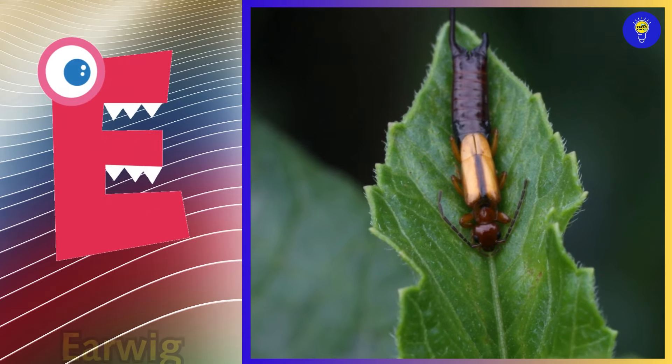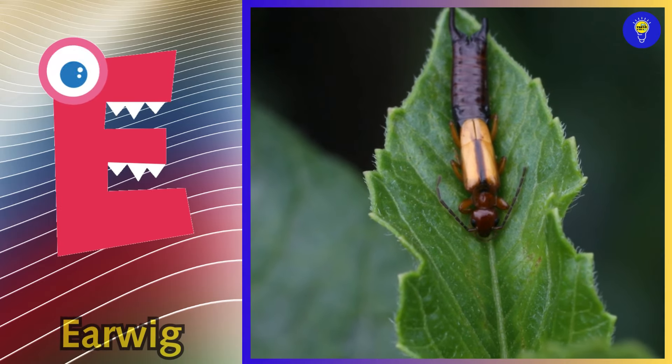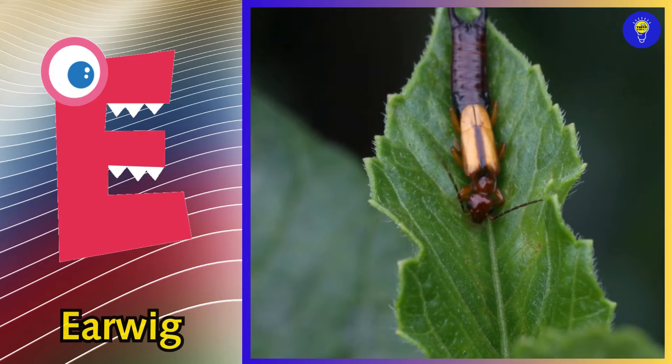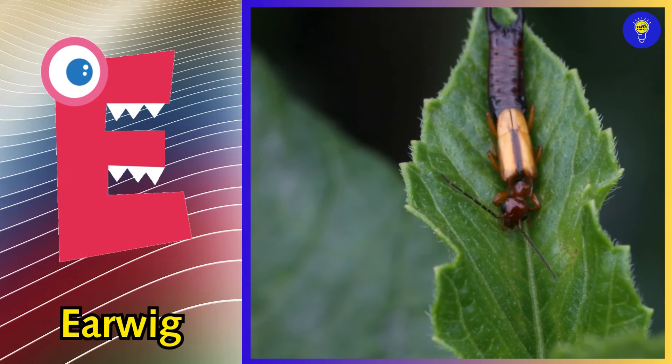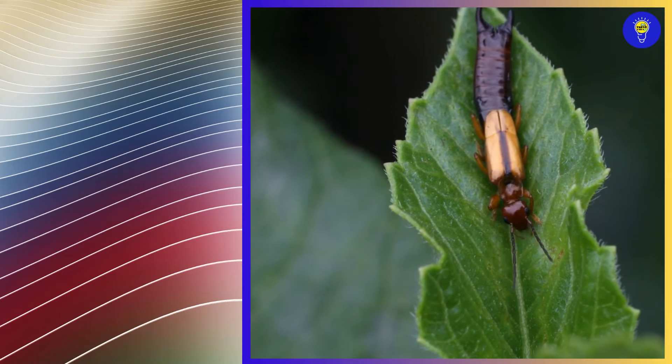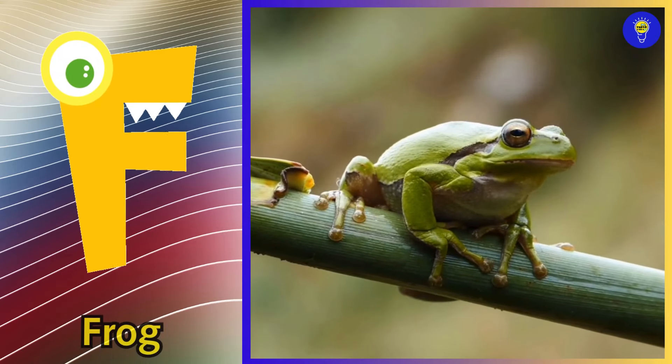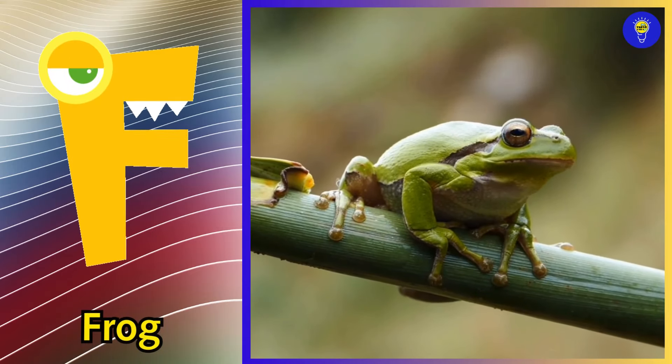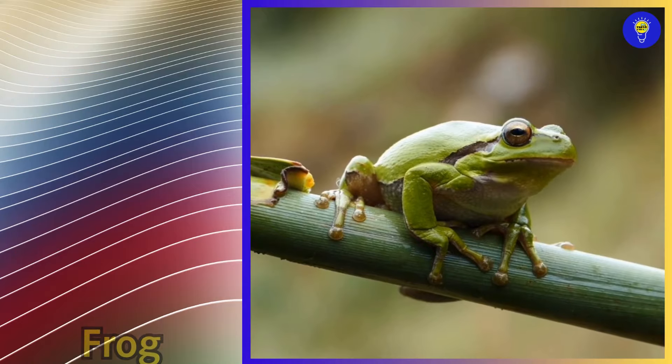E is for earwig, e, e, earwig. F is for frog, f, f, frog.